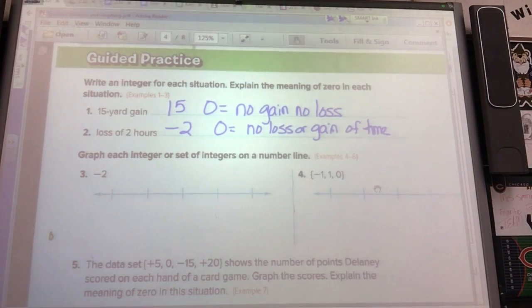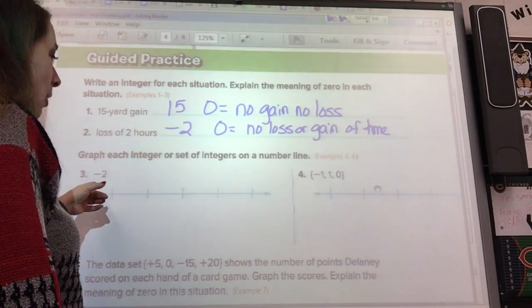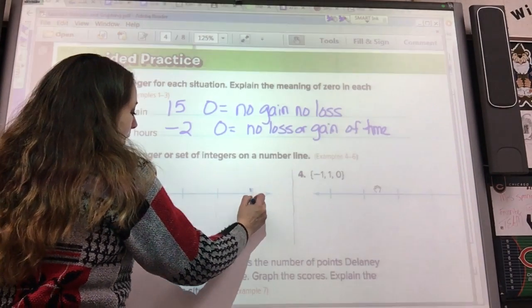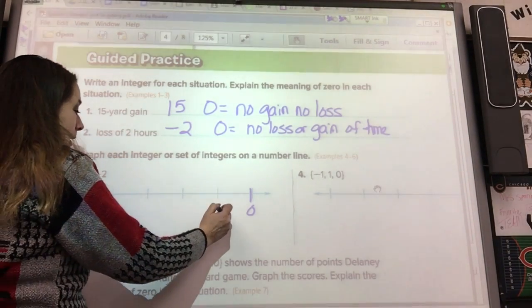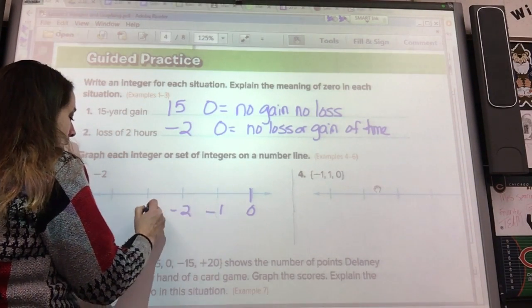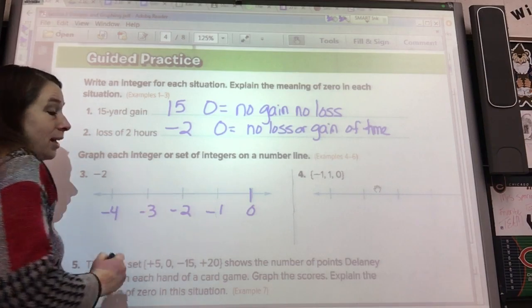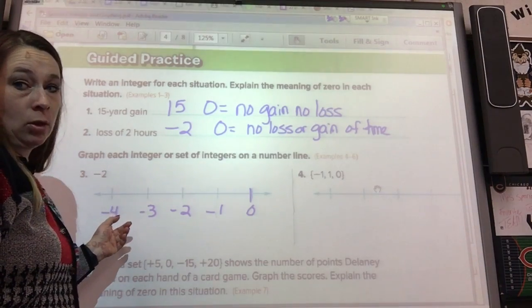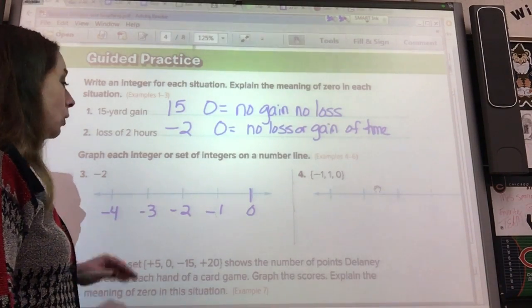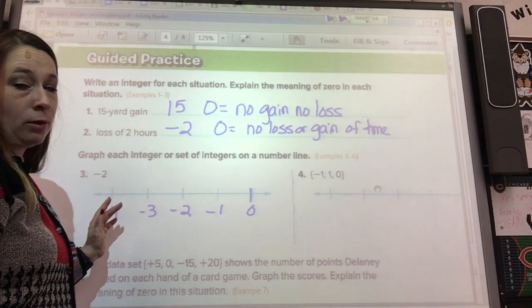It's asking us to graph these integers on a number line and they don't give us anything. When they give you a blank number line you can really start wherever you want to. Since this is a negative number, I'm going to make this my zero because I don't have any positive numbers to graph anyway. So I can make this negative one, two, three. There's a lot of different answers you could use for this one. If you get a blank one, you can pretty much put them wherever you need them.